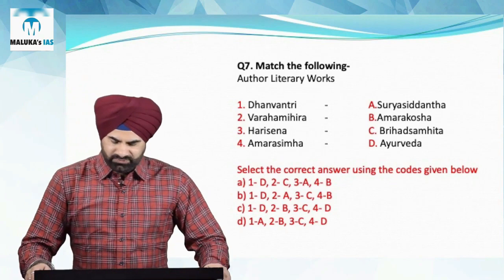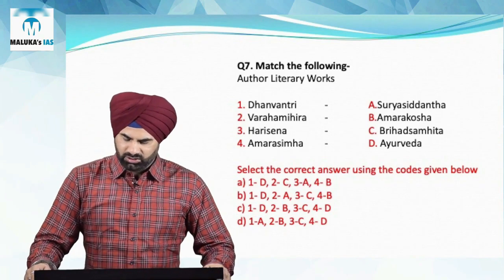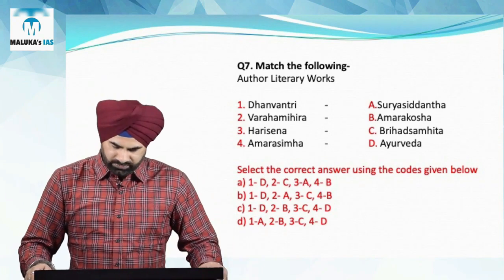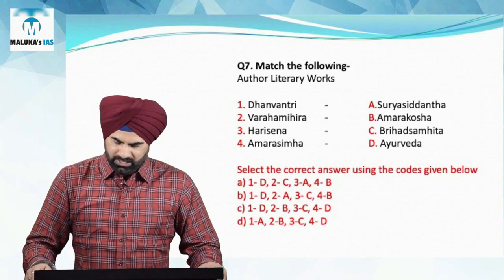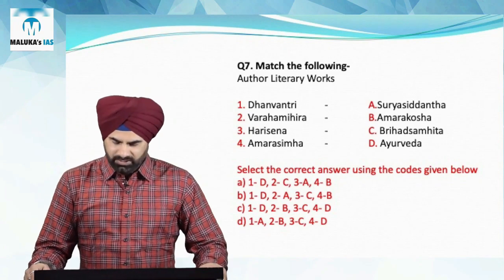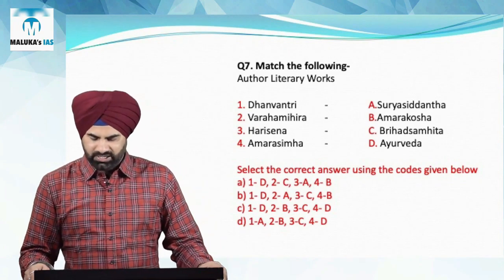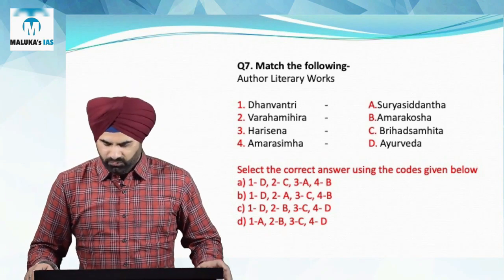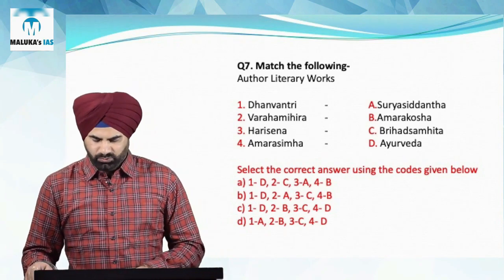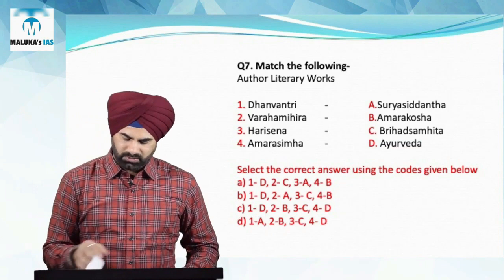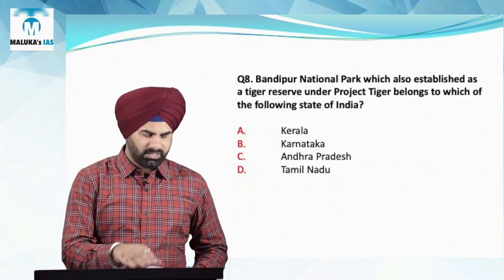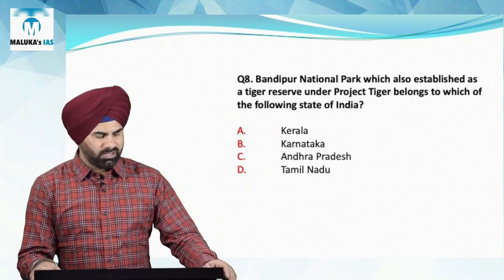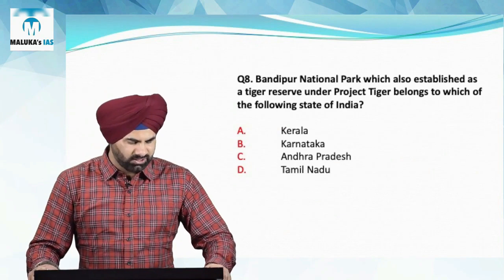Question number seven: match the following and choose the correct code. Option one-three: the author who wrote Ayurveda is paired with Varahamihira, who wrote Brihat Samhita. Harisena wrote the Surya Siddhanta, and Amarasimha wrote Amarakosha. Therefore four-three-one-two becomes the answer for question number seven.